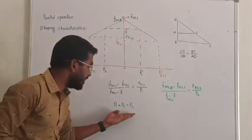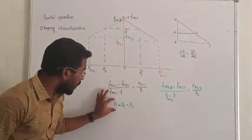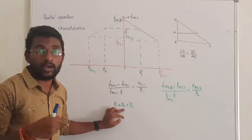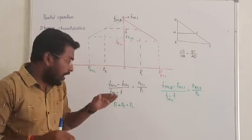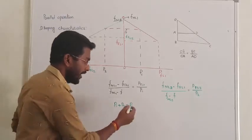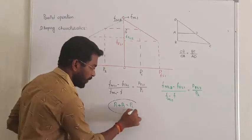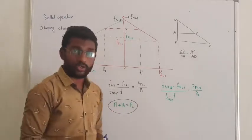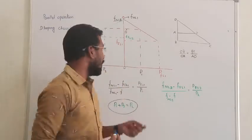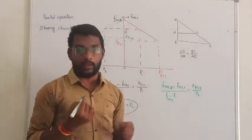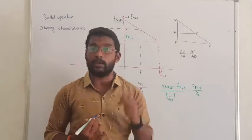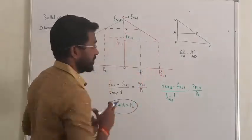They will share some loads. That is, the power shared by alternator 1 plus power shared by alternator 2 will be given. The question is: determine the power shared by alternator 1 and alternator 2 separately — P1 value and P2 value. This is the drooping characteristics problem.